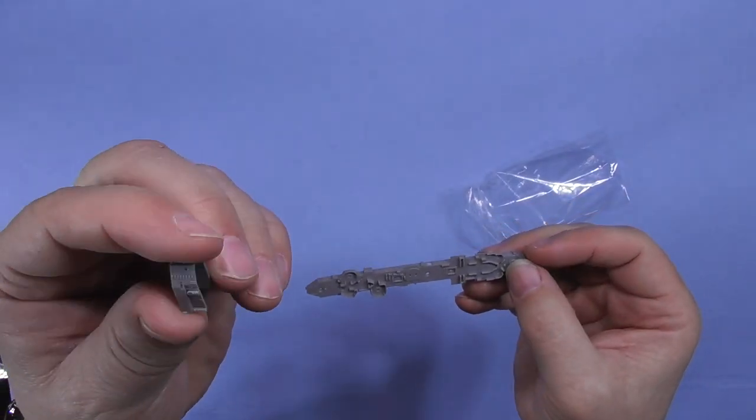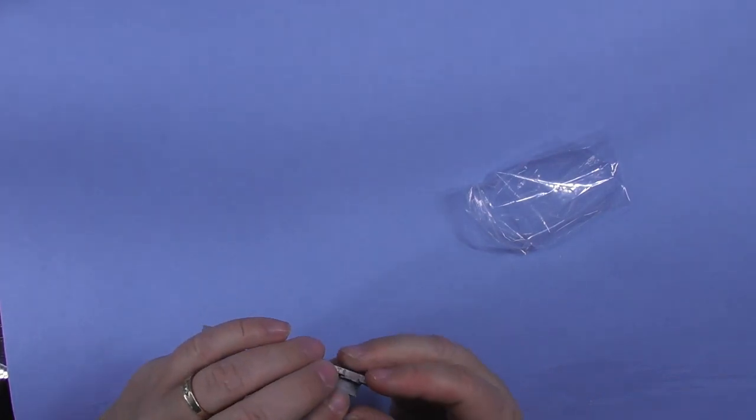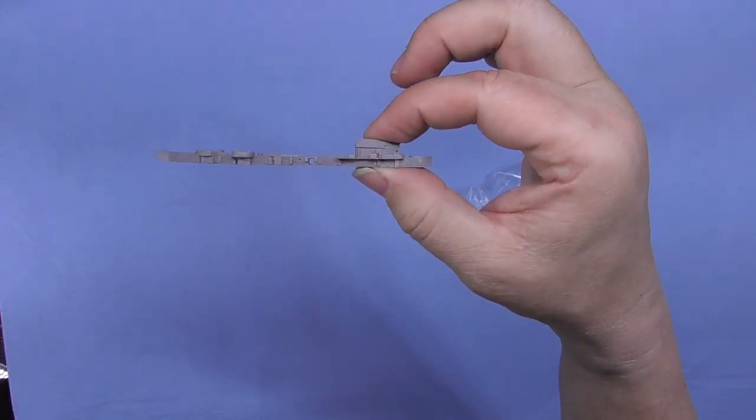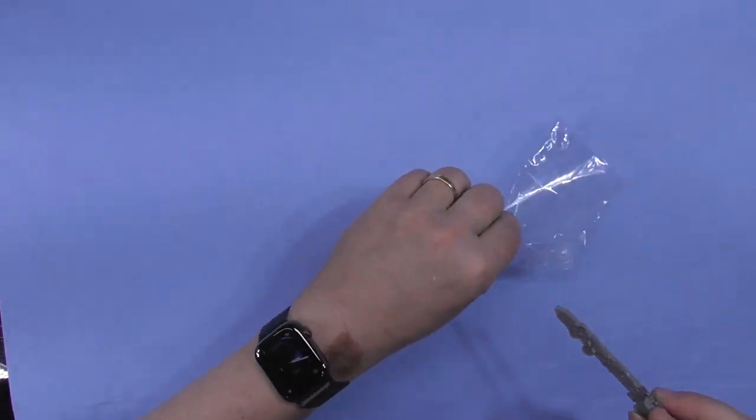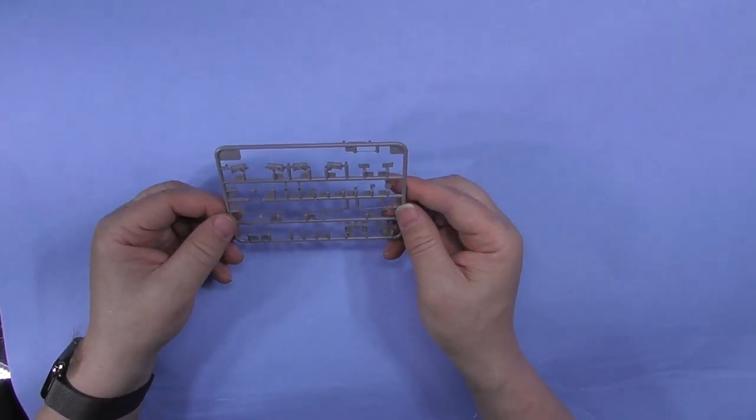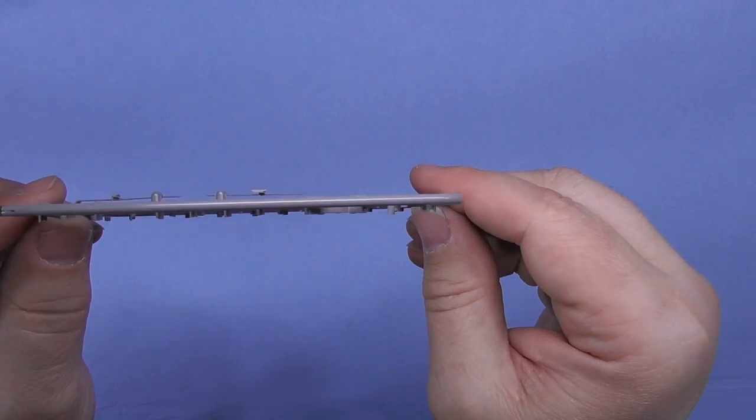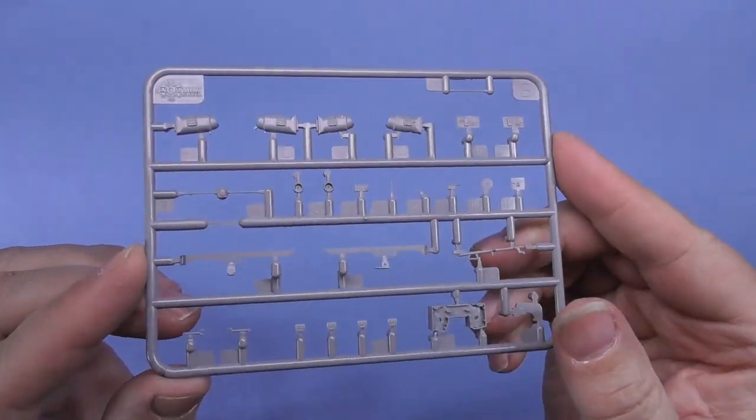And this part, obviously, goes on here somewhere, like maybe right there. So these two are in a ziplock bag. Then this one has some more parts to build up. So again, parts for building up in very small parts.